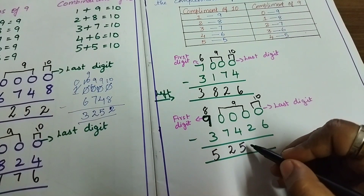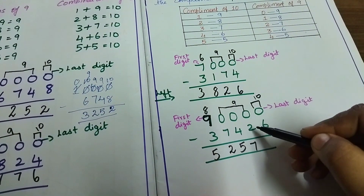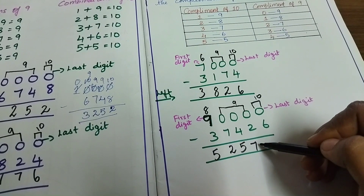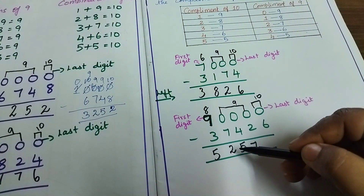Again, what is the compliment of 2? It is 7. For 7, it is 2. For 2, it is 7. Why? Because if you add 7 plus 2, you should get 9.